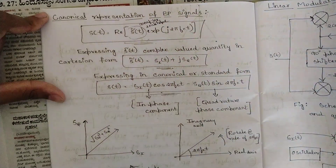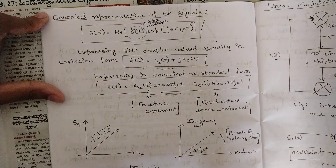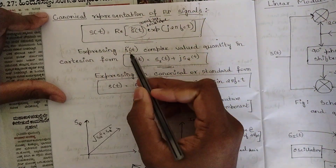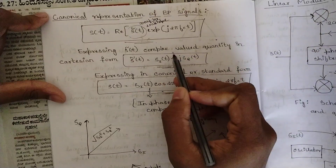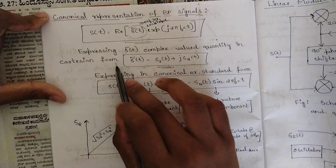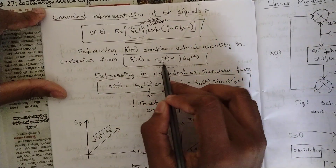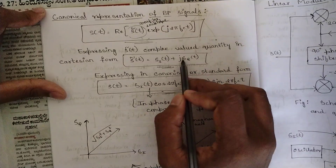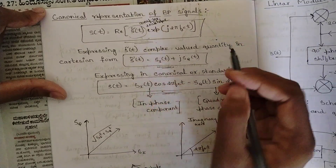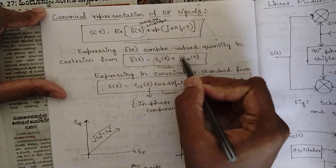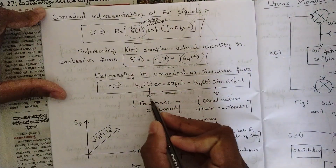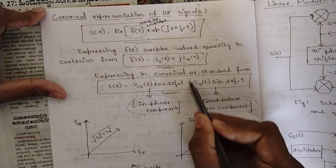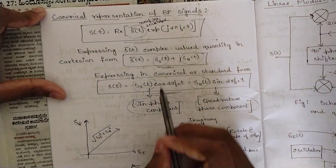What is this complex envelope and how is it related with this equation? Expressing the complex envelope as a complex-valued quantity in Cartesian form: s-cap(t) equals s_i(t) plus j times s_q(t), where s_i(t) is the real term and j·s_q(t) is the imaginary term. Here s_i(t) is called the in-phase component and s_q(t) is called the quadrature phase component.